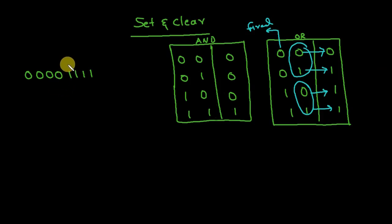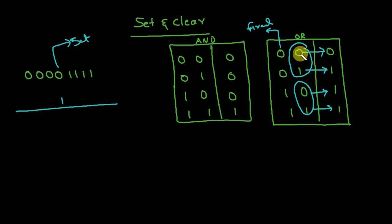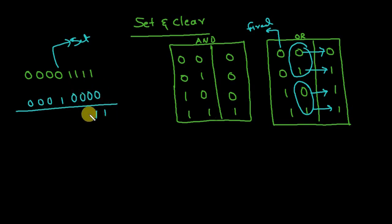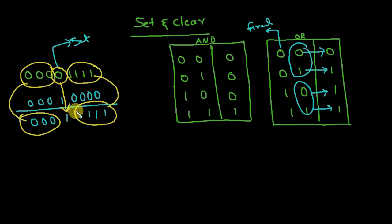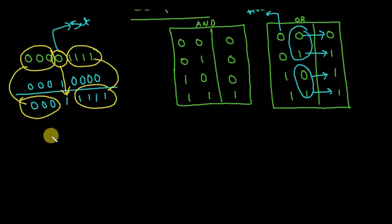This is a number in which I want to set a specific bit. At that position I'll place a one, and for all other positions I'll place zero, because ORing any number with zero gives the same number. After doing the OR operation, only that one bit is changed — it is now set — and all other bits remain unchanged.